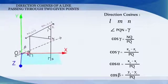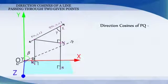Hence, the direction cosines of the line segment joining the points P(x1, y1, z1) and Q(x2, y2, z2) are